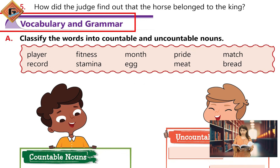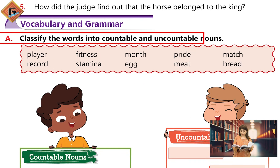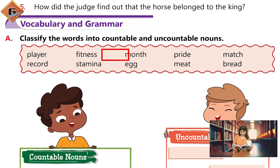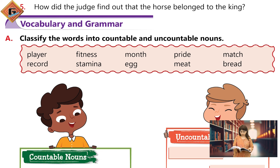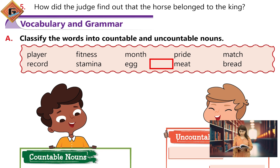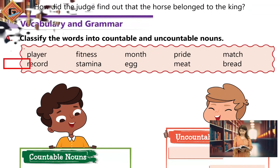Vocabulary and grammar: countable and uncountable nouns. Countable nouns are those nouns that we can count, such as player, month, egg, match, and bread. Uncountable nouns are those nouns that we cannot count, such as fitness, stamina, meat, pride, and record.